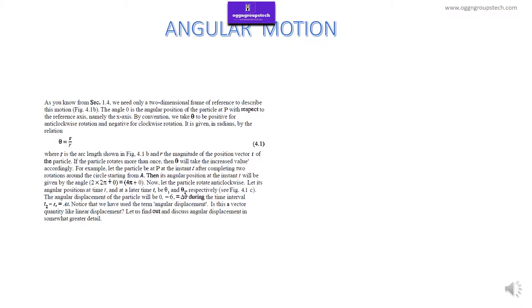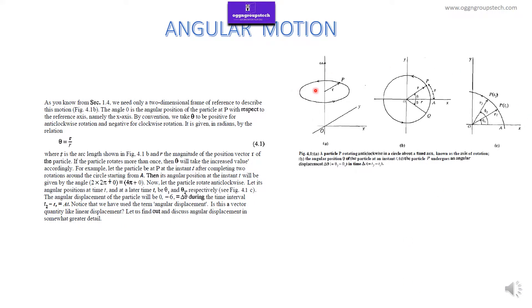Let's begin with our topic: what is meant by angular motion? This middle line is known as the axis of rotation, and for now we are denoting this line as omega. Omega stands for angular velocity. Here we have a y-axis and an x-axis. In this case, you will find a point P which is performing circular motion. From the center, that is from the axis of rotation, the distance of this point P is R — the distance from the axis of rotation, which we are denoting as R.